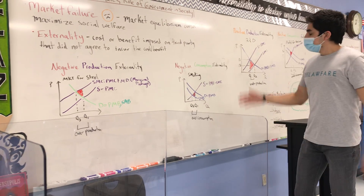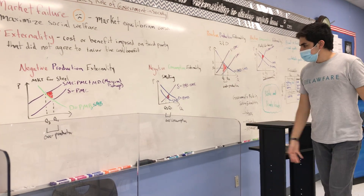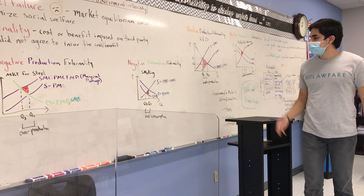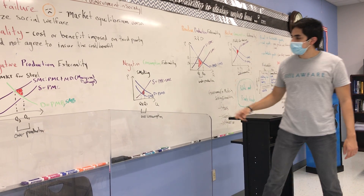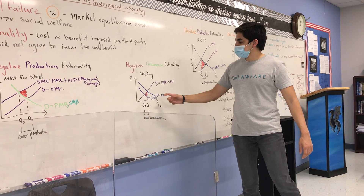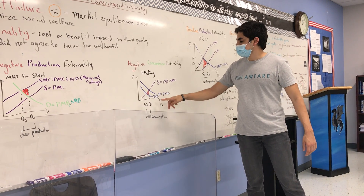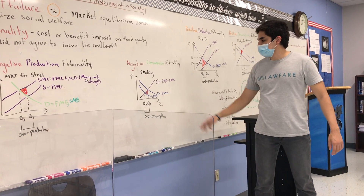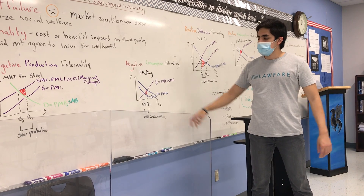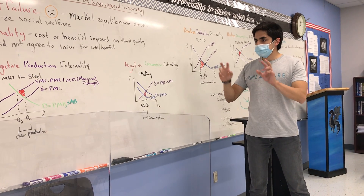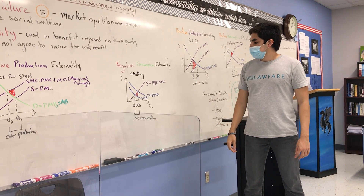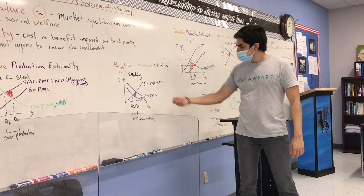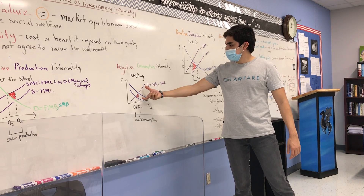Then we have a negative consumption externality. We can think of consumption externalities as a gap between the social marginal benefit curve and the private marginal benefit curve, or the demand curve. And we can see it here.